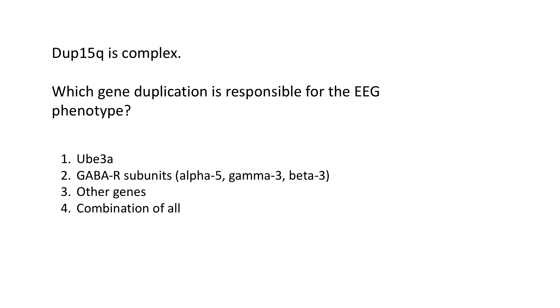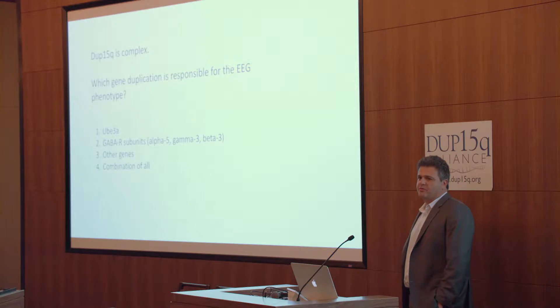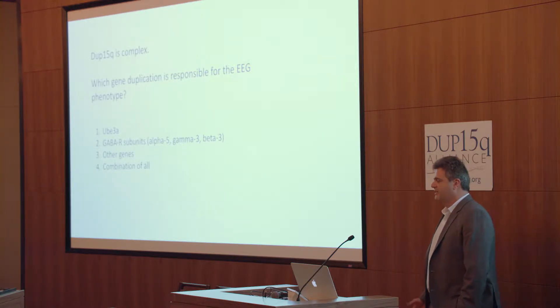What is causing this change? Which gene duplication is responsible? Is it UBE3A, which is maternally imprinted and a lot of people are going after? Or is it the GABA receptor subunits? The reason we thought of the GABA receptor duplications is that this increase in beta oscillations is very similar to what happens after you give benzos to kids or adults — you get a very dramatic increase in beta oscillations — but none of the kids have actually received benzos. And the three subunits — alpha-5, gamma-3, and beta-3 — are duplicated in this syndrome.